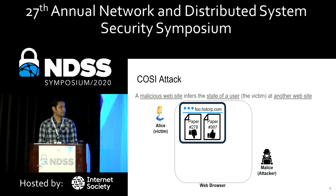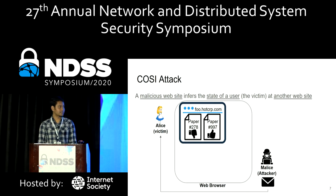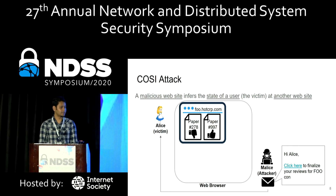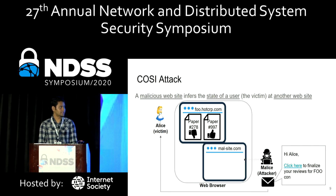In order to perform a COSI attack, the attacker needs to load a malicious page in Alice's browser. Here Malice is actually trying to create an email address that looks like the PC chair and telling Alice to click this link to confirm your reviews for FooConf. So when Alice clicks on the link, the malicious site controlled by Malice is loaded in Alice's browser, and using the COSI attack, the malicious site can infer the state of Alice at foo.hotcrp.com.